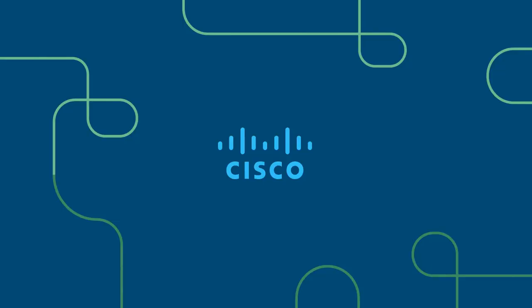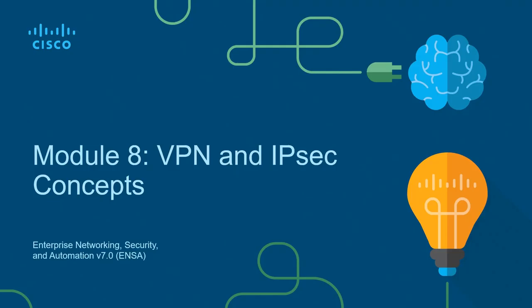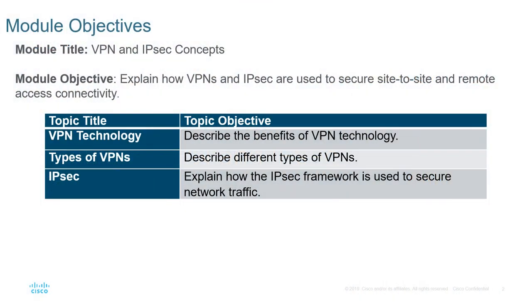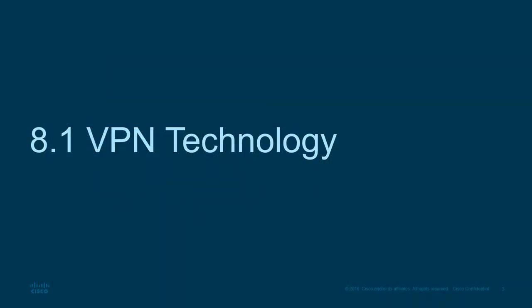Welcome. This is the Cisco CCNA ENSA, also known as the Enterprise Networking Security and Automation course. This course focuses on the CCNA version 7 curriculum. This is course three of three, module eight: VPNs and IPSec concepts. We're going to be looking at VPN technologies, types of VPNs, and we're going to end with IPSec.